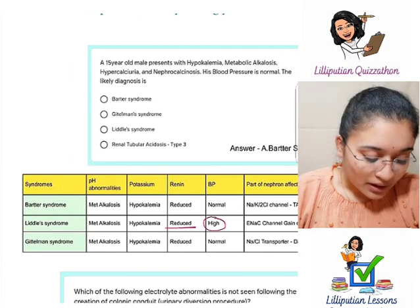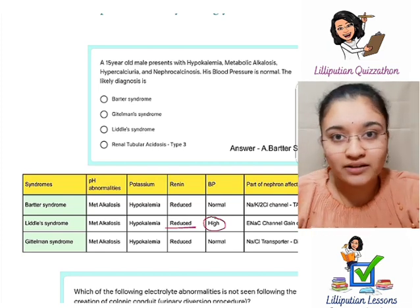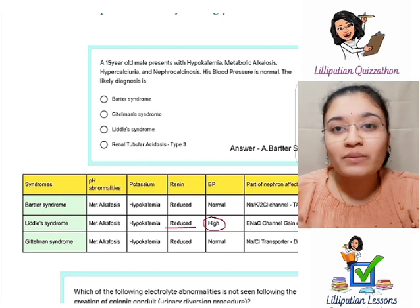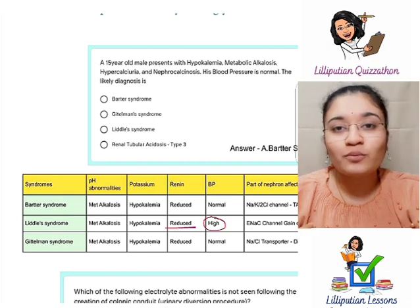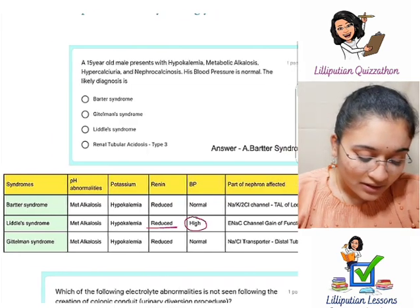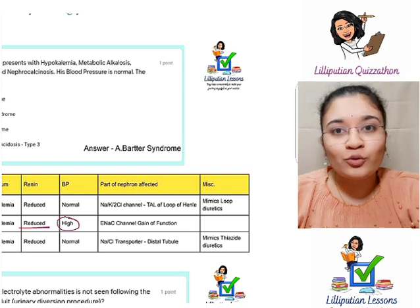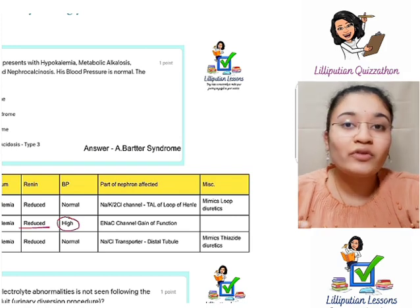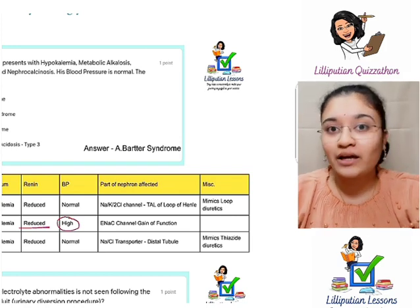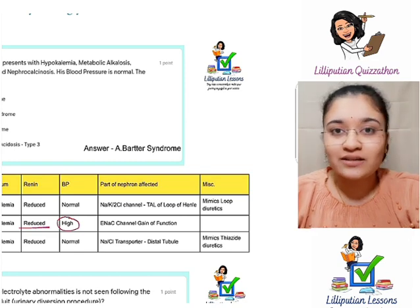In Bartter and Gitelman syndrome, earlier these two were classified under Bartter itself, but Gitelman has been separated into its own syndrome because of genetic differences. Essentially, if you know the mechanism of action of loop and thiazide diuretics, it's very simple to understand Bartter as well as Gitelman syndrome. In Bartter's syndrome, there is a problem with the sodium-potassium-2-chloride channel.